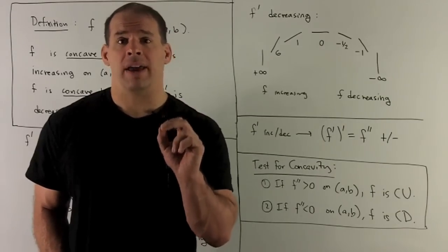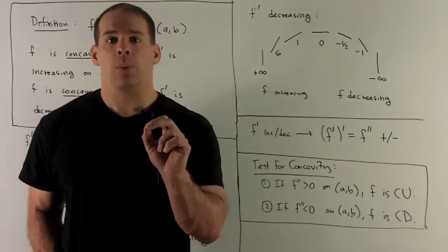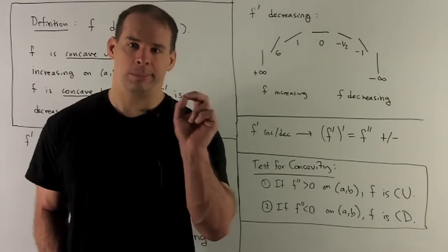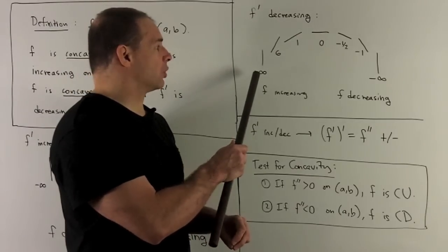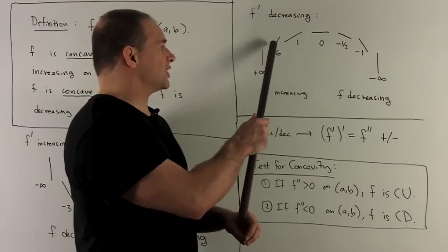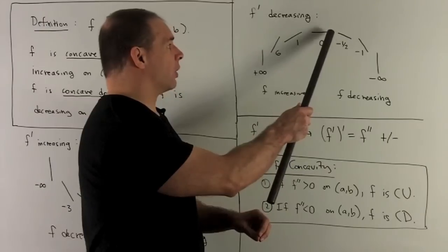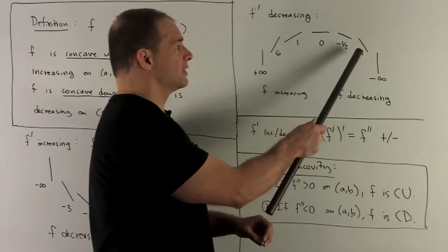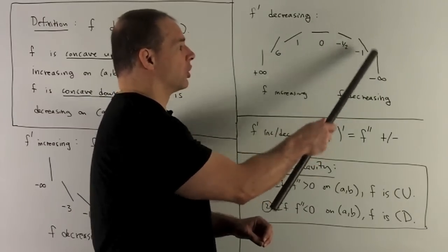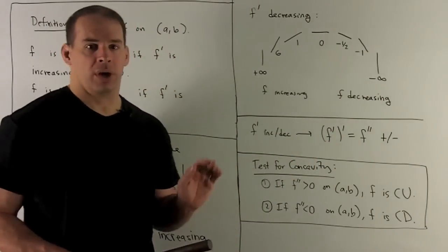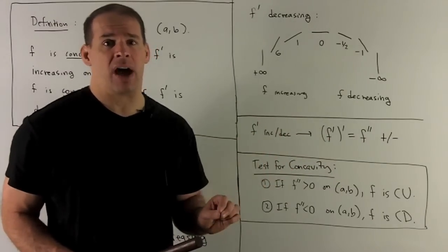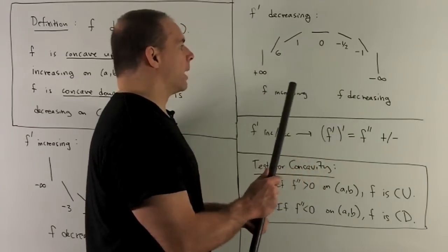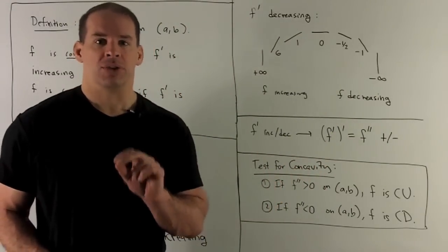Now let's look at the picture for f prime decreasing. We start with slope as positive as it can be — plus infinity, meaning just a vertical line — then decrease: down to six, to one, flattening out at zero, then becoming negative, going to minus a half, minus one, and back to vertical at minus infinity. Connect the dots and we get a bowl facing down. Again, increasing and decreasing are not restricted at all by being concave down.